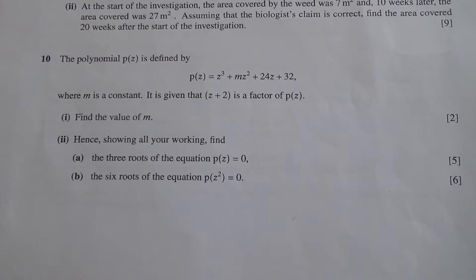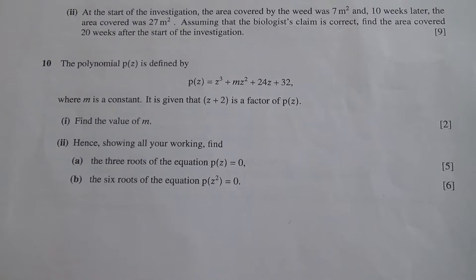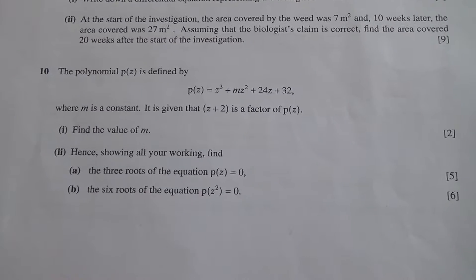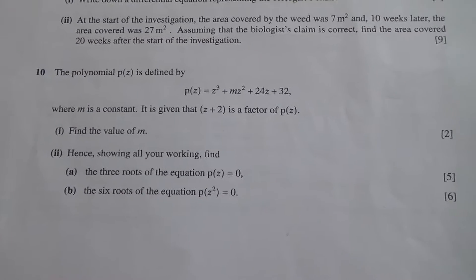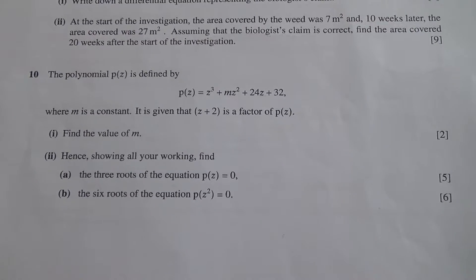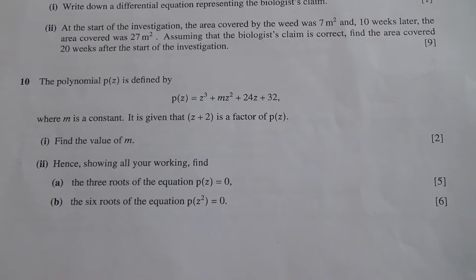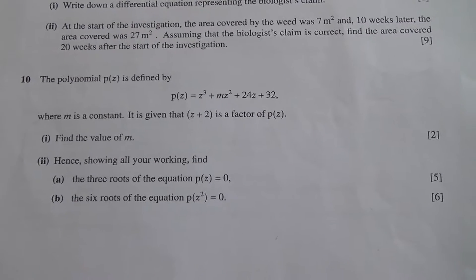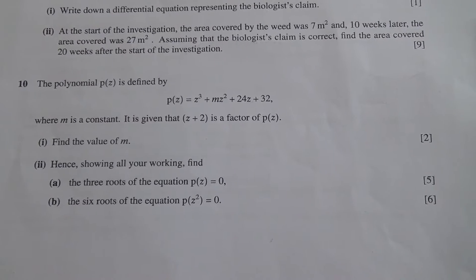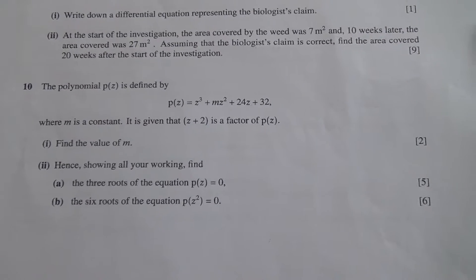Question number 10. The polynomial P(z) is defined by P(z) = z³ + mz² + 24z + 32, where m is a constant. It is given that z + 2 is a factor of P(z). Find the value of m for the first part.